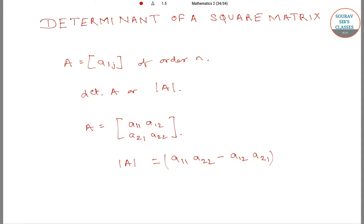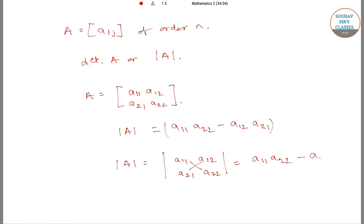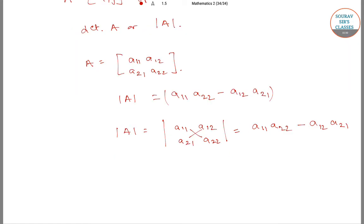That is, mod of A equals the determinant written as: a11, a12, a21, a22, which equals a11 into a22 minus a12 into a21. This applies when A is a square matrix of order n.